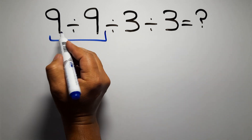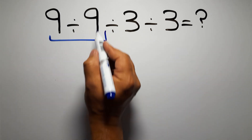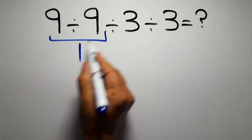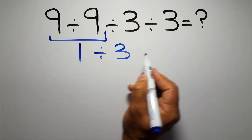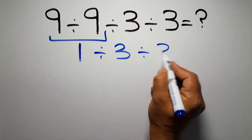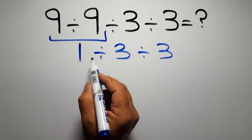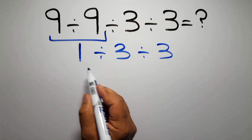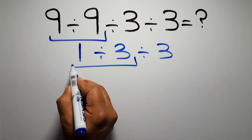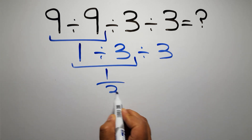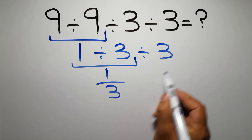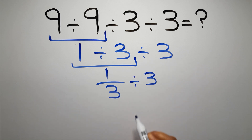So first we have to do this division: 9 divided by 9 is just 1. So 1 divided by 3, and again divided by 3. Now we have to do this division: 1 divided by 3 can be written as 1 over 3, so we have 1 over 3 divided by 3.